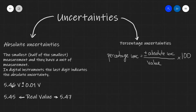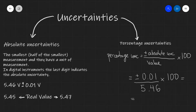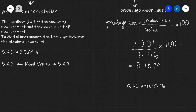In the case of this measurement here, our percentage uncertainty will equal plus or minus our absolute uncertainty, which is 0.01, divided by our value, which is 5.46, times 100. We can put this into a scientific calculator: 0.01 divided by 5.46, times 100, and this will be equal to 0.18%. This means that we can also write our original value, 5.46 volts, as simply 5.46 volts plus or minus 0.18.